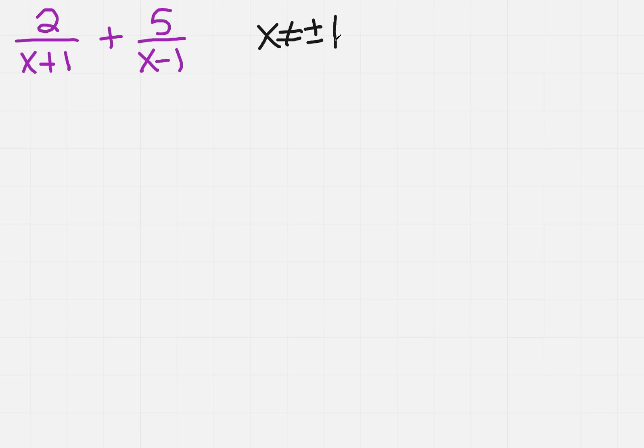And so the easiest way to think about finding the common denominator is that you want one of each thing that looks different on the bottom. So I've got an x plus 1 in the first term, and I've got an x minus 1 in the second term. So that's going to be my common denominator. So I'm going to write that out first for both of them.